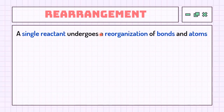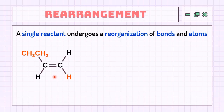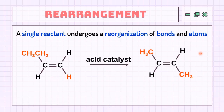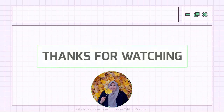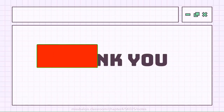Rearrangement is a reaction in which an atom, ion, or group of atoms migrates from one atom to another in the same or different species, resulting in a structural isomer of the original molecule. For example, a molecule with an alkyl group of two carbons undergoes rearrangement to have only one alkyl group on each carbon. That's all for subtopic 4.4, and this marks the end of chapter 4. Thank you!